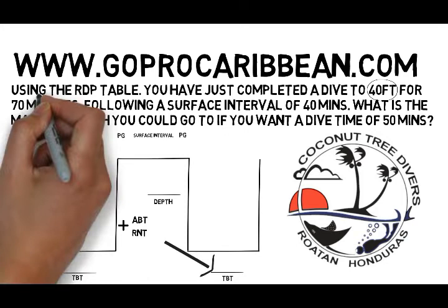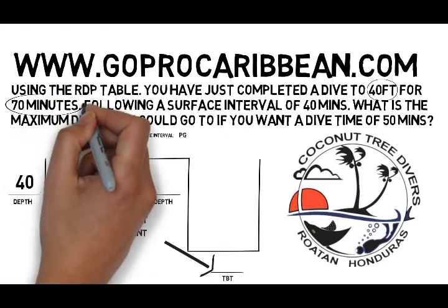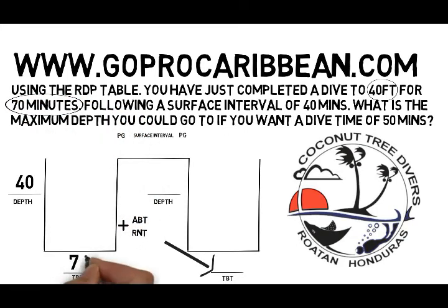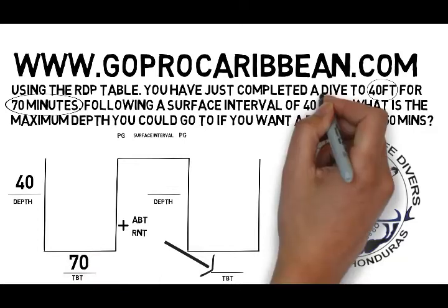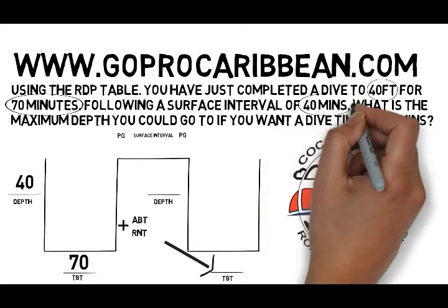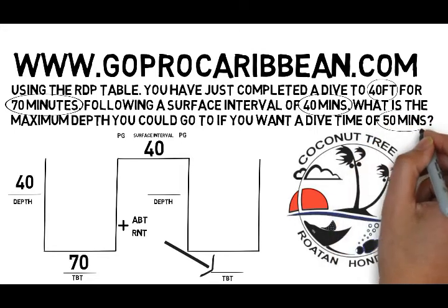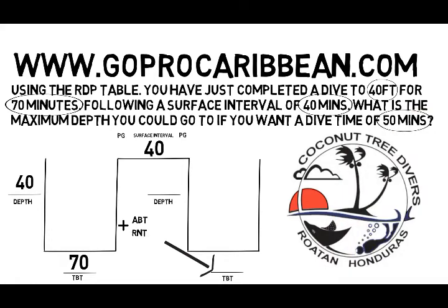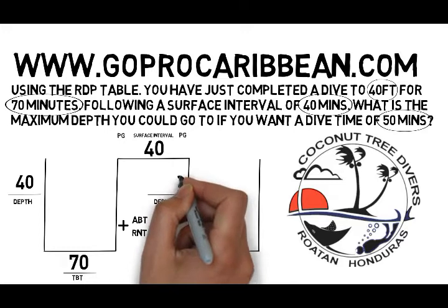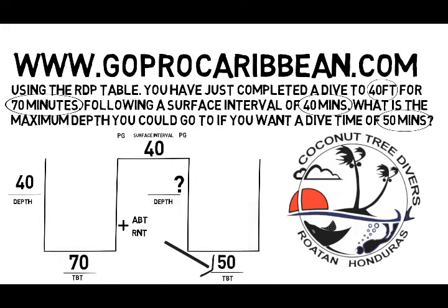The first dive was 40 feet and the time of that dive was 70 minutes, so we can enter that information in. Then continuing to work from left to right, we have our surface interval — that can be filled in because we're given it in the question: it's 40 minutes. The final bit of information we have is our dive time of 50 minutes. It doesn't really matter whether you put it in actual bottom time or total bottom time — we'll have the information in the right place to answer the question when we need it.